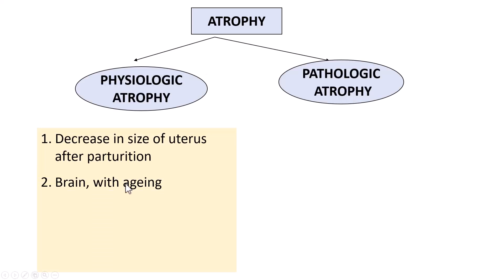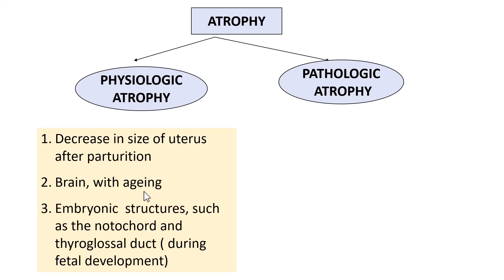Another important example of physiologic atrophy is that our brains shrink in size due to the aging process. And another example is the atrophy of embryonic structures such as the notochord and thyroglossal duct during fetal development — as part of normal development, these embryonic structures undergo atrophy. So these are some examples of physiologic atrophy: one, because of the aging process; two, because of the involution of the uterus after delivery of the child.